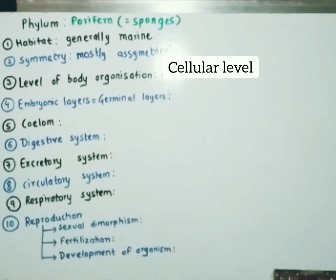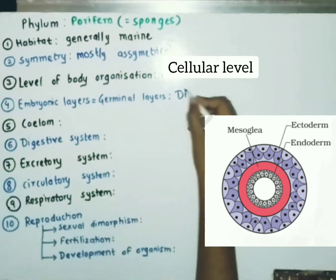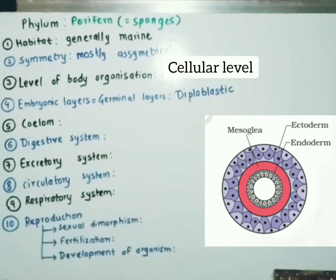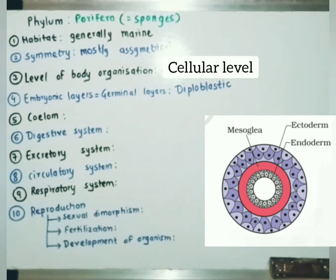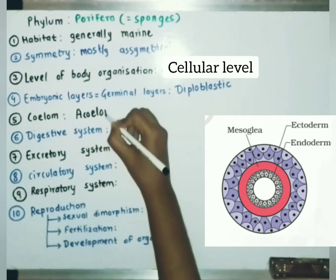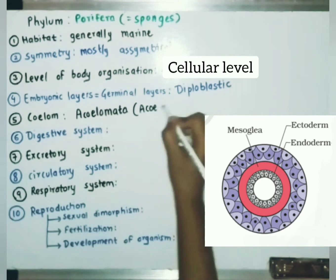Now let's see embryonic layers, also known as germinal layers, in Porifera. Porifera are diploblastic, which means the cells are arranged in two embryonic layers — ectoderm and endoderm. Coelom is a body cavity present between the body wall and gut wall of an organism, and this body cavity is lined by mesoderm. Coelom is not present in Porifera; thus, they are acoelomates.